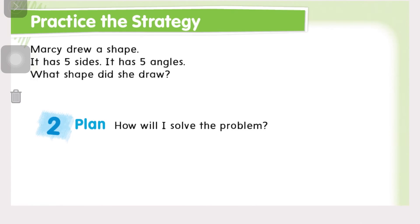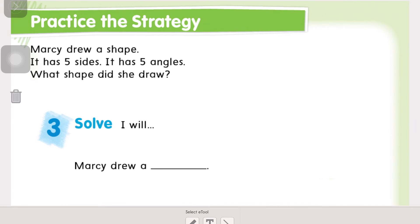how we will solve the problem. So I'm going to scoot forward to three because otherwise my first two steps will not show up. But we're going to underline what we know. Marcy drew a shape. It has five sides. It has five angles. What shape did she draw is what we're trying to find. So go ahead and do that on page 752 at the top. Underline what you know. Circle what we need to find out.